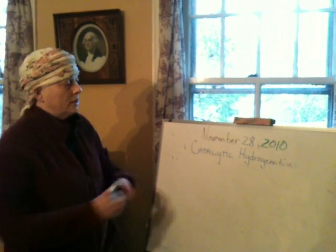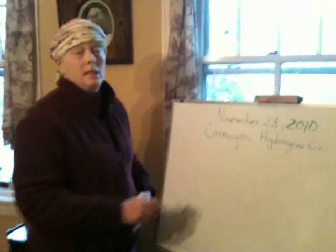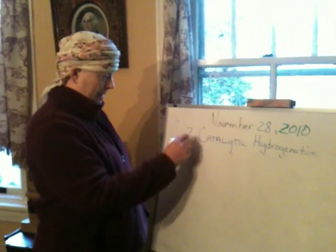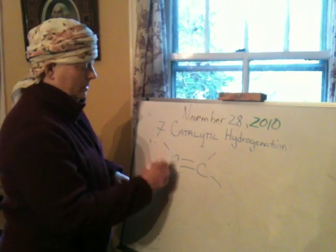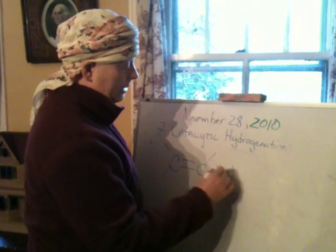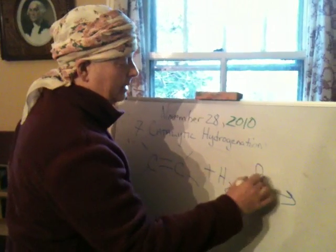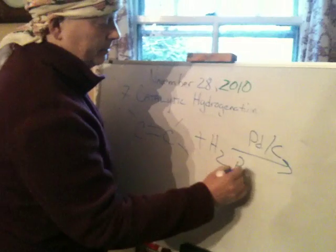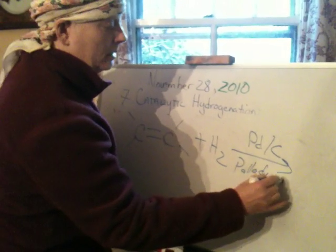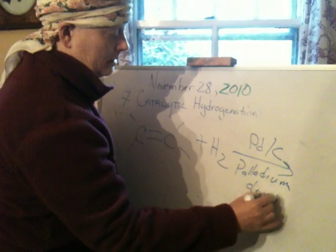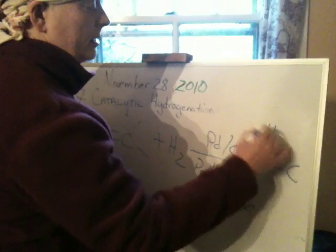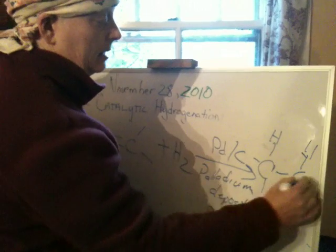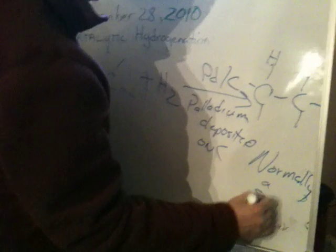As far as catalytic hydrogenation goes, and I forget which number this is — this is number 7 or number 8 in the reactions, possibly 7 — you have some kind of double bond, you add hydrogen gas to it in the presence of palladium on carbon. This is palladium deposited on carbon. And in doing so, you will add hydrogens — it's normally a syn addition.